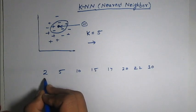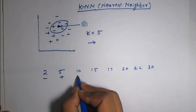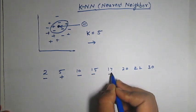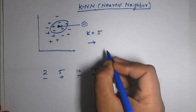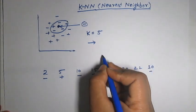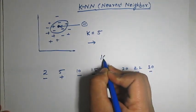And some of these examples are belonging to plus class and some are belonging to minus class. And suppose we want to classify a data point. The value of that unknown data point is for example 16.